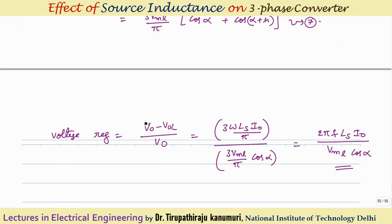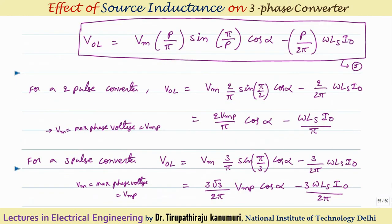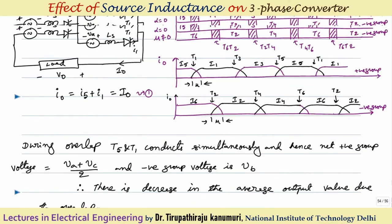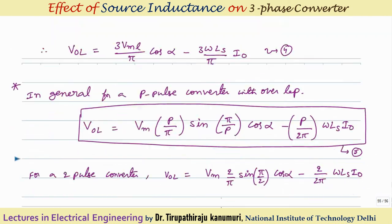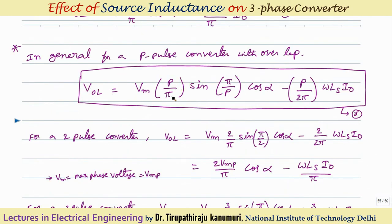Using this we can calculate the load voltage for any particular overlapping period. The voltage regulation is V₀ − VOL = 3ωLs × I₀/π, and the no-load voltage is (3VmL/π) × cos α. The key takeaway is that in practice there is always an effect of source inductance, and the generalized formula VOL = Vmax × (P/π) × sin(π/P) × cos α − (P/2π) × ωLs × I₀ must be used, where Vmax is the appropriate maximum voltage depending on the converter type.